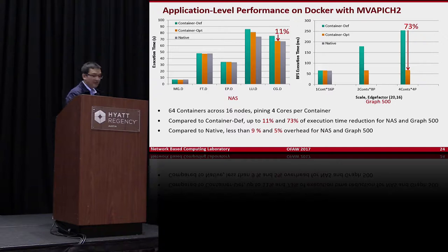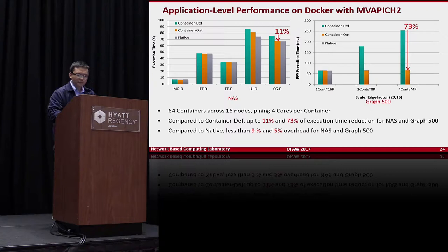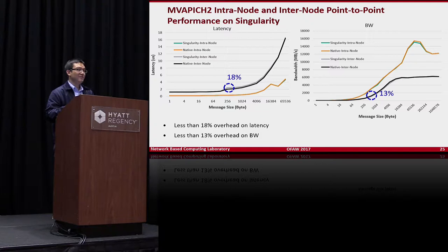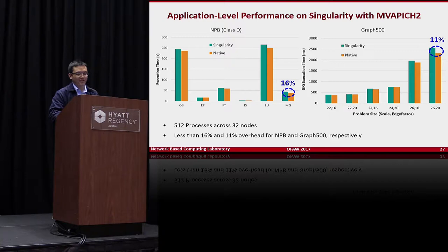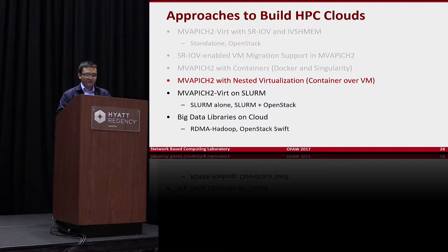Looking at application-level performance, compared to running default MPI inside a Docker environment, we achieve around 73% improvement. For Singularity — another container technology gaining traction in HPC — our solution shows around 13–18% difference compared to native for point-to-point, collectives, and applications such as NPB Class D and Graph500 on 32 nodes with 512 processes. These results are very promising.